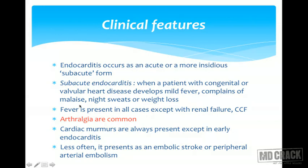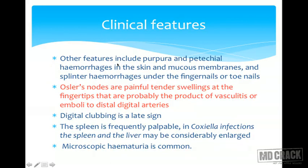Arthralgia is very common in infective endocarditis — an important MCQ point. Cardiac murmurs are always present except in early endocarditis. Less often, it can present as an embolic stroke or peripheral arterial embolism. Other features include purpura and petechial hemorrhages in the skin and mucous membranes, and splinter hemorrhages under the fingernails or toenails.